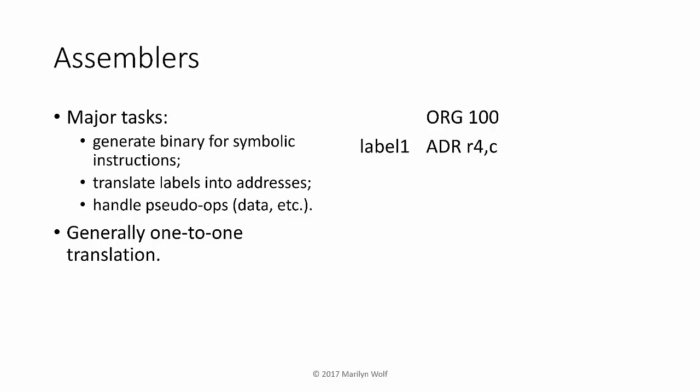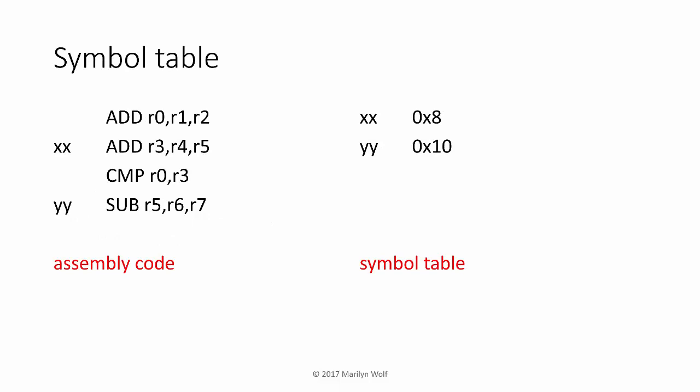On the right-hand side we have a simple example of assembly code with an ADR instruction from ARM, used to load a location into a register. This operation is given a label so we can refer to that location. The org statement at the top stands for origin — a traditional way to specify an address, here set to 100. On the left-hand side, we have two labels: XX goes into the symbol table with one value, and YY goes in with its own value, so we can substitute those values when we refer to them.